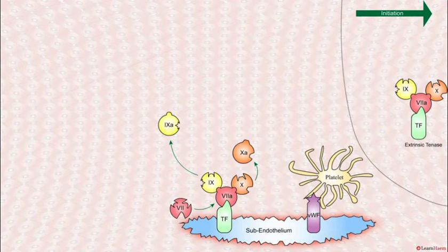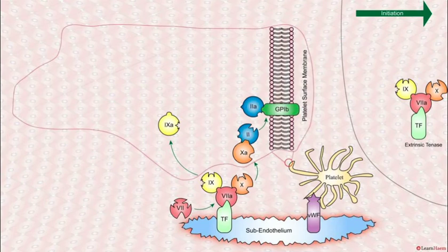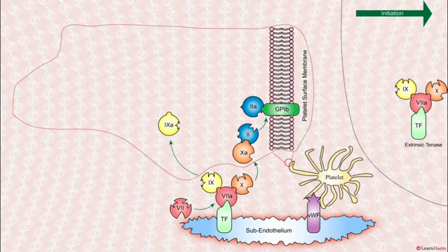This factor 10a, in the presence of factor 5a, is going to lead to conversion of factor 2 to 2a, which is thrombin. That is going to lead to the generation of the fibrin-rich clot.